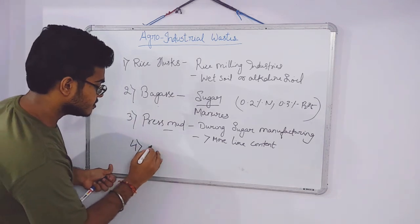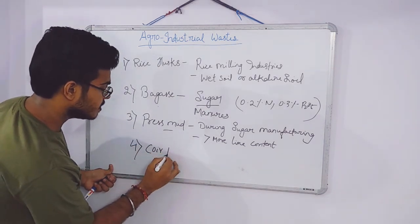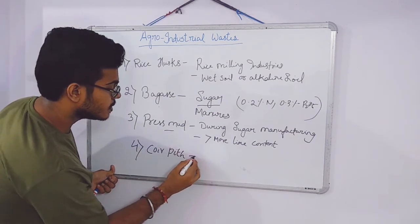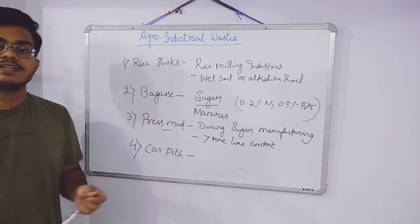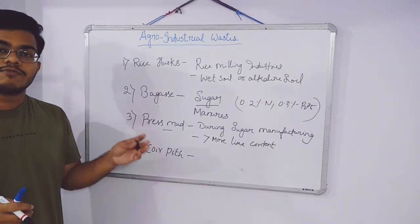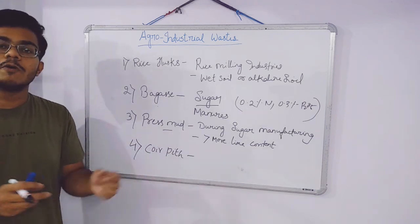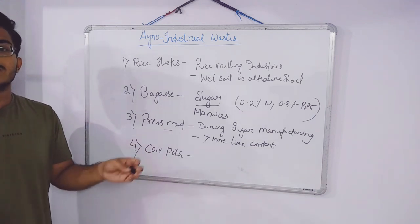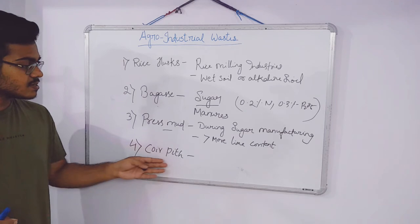What is coirpith? Coirpith is nothing but agricultural waste which is being found from the rope industries. Ropes are being prepared from the coconut coir, so this is the coirpith.